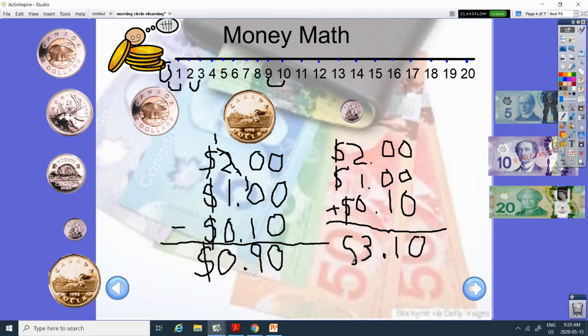So if we were to add it, we would have $3.10. If we subtract these coins from each other, we would have 90 cents.